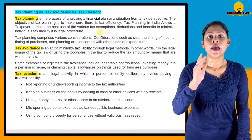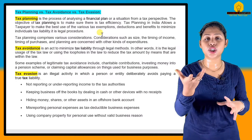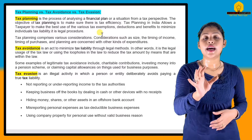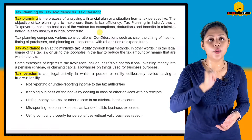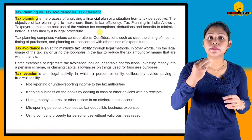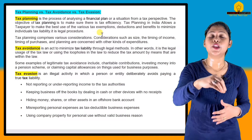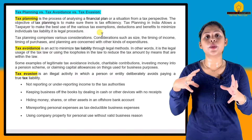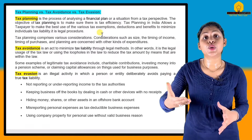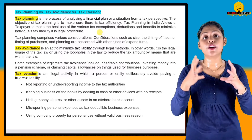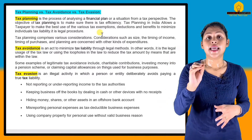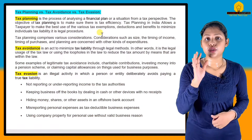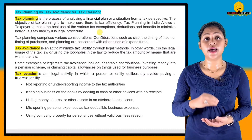The government has already announced certain schemes and deductions. For example, under the Income Tax Act, there is a deduction if you invest in LIC. The government has provided this scheme — if you invest in LIC, your taxable income is reduced under the Act. This deduction by exemption follows government rules, and using it constitutes legal tax planning.